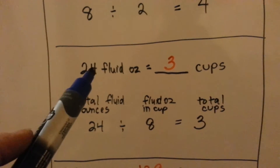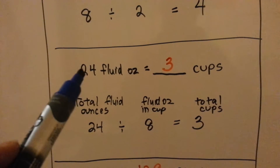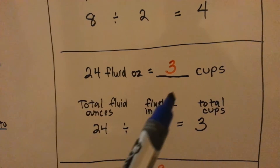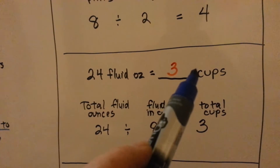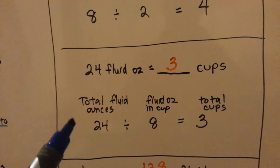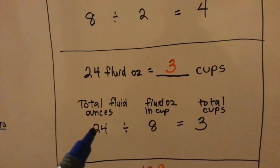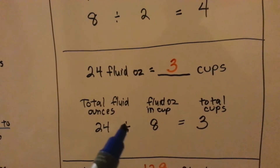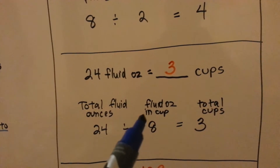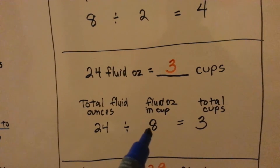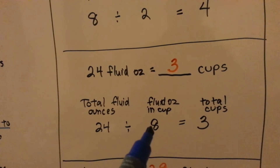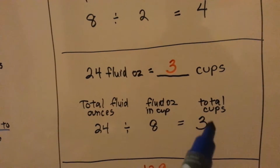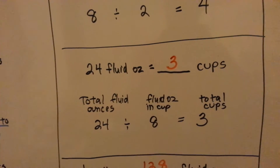If we have a smaller amount, like fluid ounces, and we want to convert it to cups, we get the total fluid ounces — 24 — and divide by the number of fluid ounces in a cup, which is 8. 24 divided by 8 is 3. That gives us 3 cups.